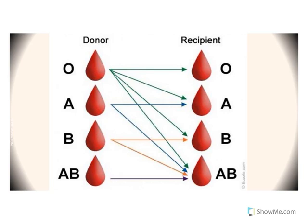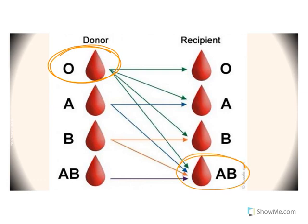Before you get started on your practice problems, we need to talk about universal donor and universal recipient. If you have type O blood, you are considered a universal donor, meaning your blood can be given to any blood type — any person with any blood type can receive type O blood. Type AB blood is a universal recipient or acceptor, meaning if you have type AB blood, you can receive all four types of blood. Make sure you know that O is the universal donor and AB is the universal recipient or acceptor.